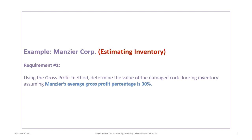This tutorial is based on the Manzir Corp example, so please make sure that you download it so you can follow along. Tutorial 18A will focus on requirement 1: using the gross profit method, determine the value of the damaged corp flooring inventory assuming that Manzir's average gross profit percentage is 30%. This is the GP percentage.